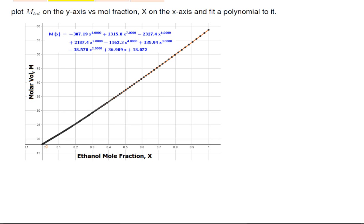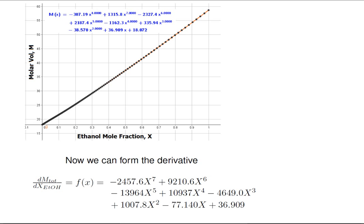Here I've plotted molar volume on the y-axis versus ethanol mole fraction on the x-axis and fit a polynomial to it. You need high precision and a really good fit. I could have probably done it with a lower-order polynomial instead of an eighth-order polynomial, but I just let an automatic fitting program find this equation. Now we take the derivative of the fitted function, thereby getting the derivative of molar volume with respect to mole fraction as a function. Both m-sub-x and its derivative f-sub-x were kept with five more decimal places than shown — you really do need good precision to do this.